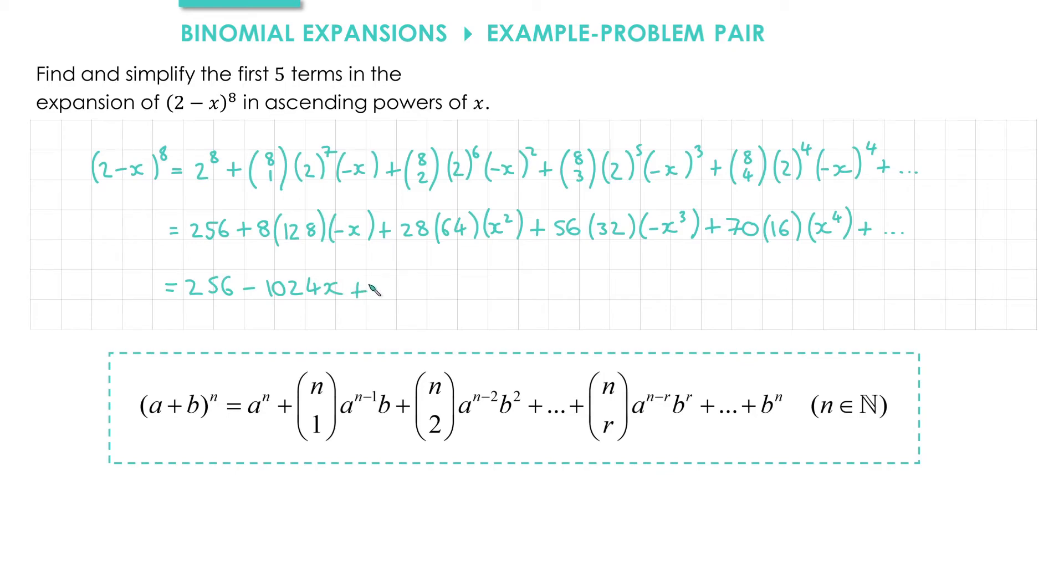For the x squared term, we have 28 times 64, which is 1792.